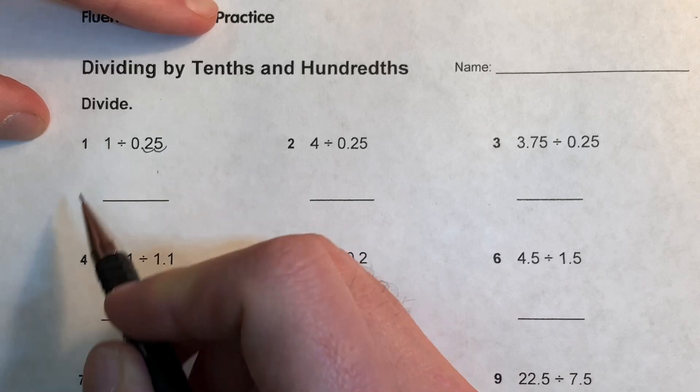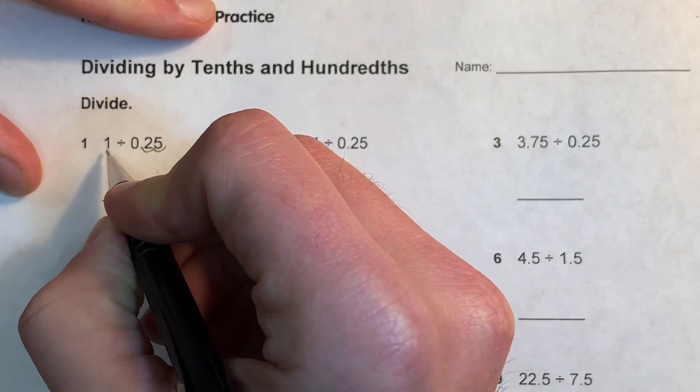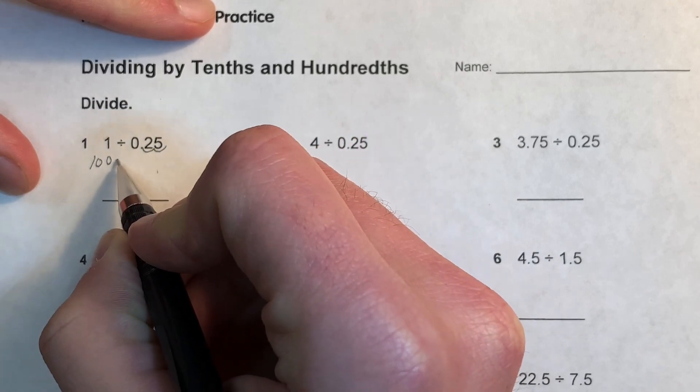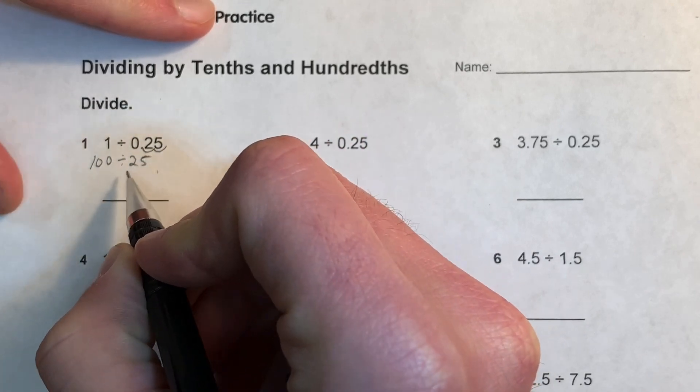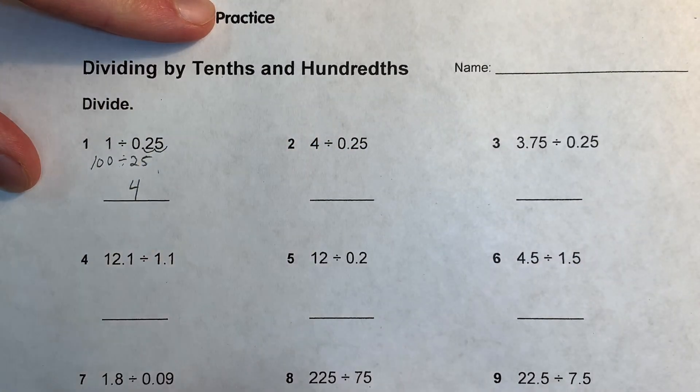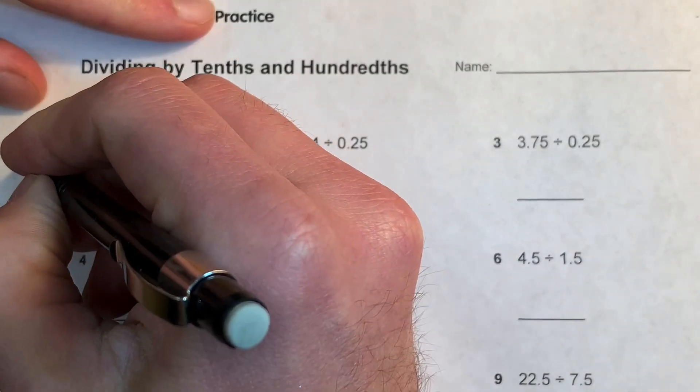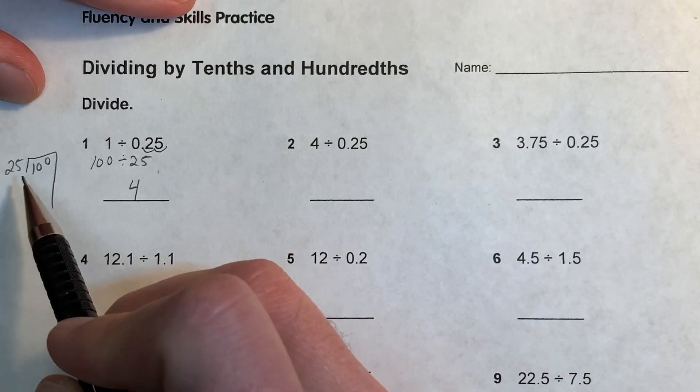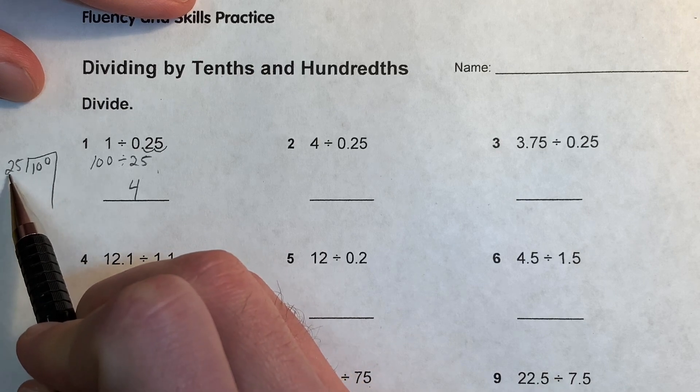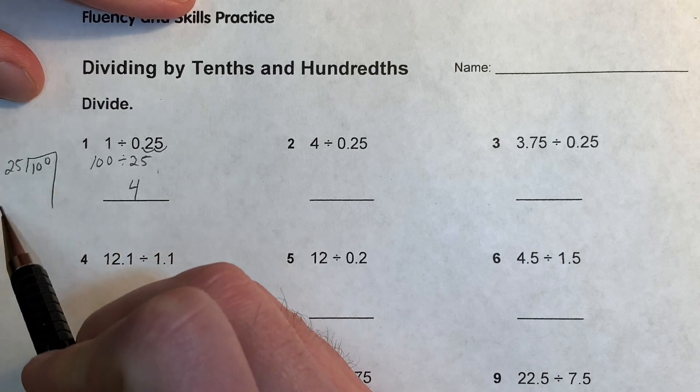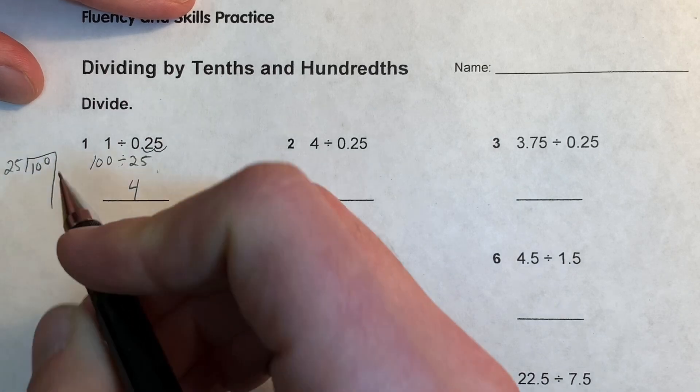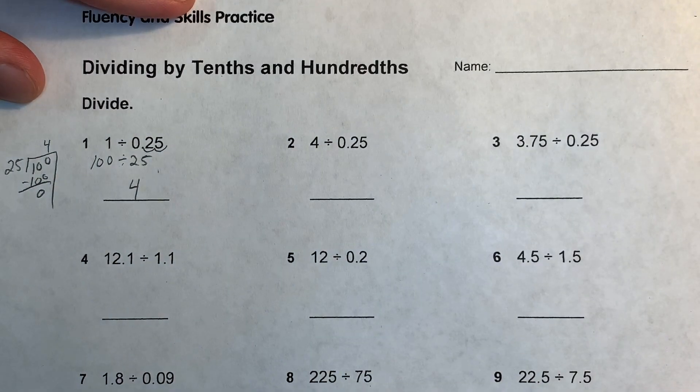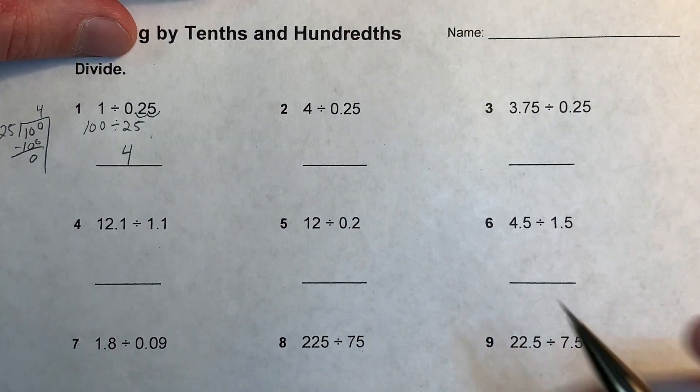We need to times this by a hundred, so one times a hundred is a hundred. Since I multiplied this side by a hundred, same thing. Then I can do that in my head. So if I didn't, I could do the partial quotient or area model. I could say that 25 does not go into 1, I cannot make a group of 25 from 10, but I can make a group of 25 from 100, and I can make four of those. Subtract.